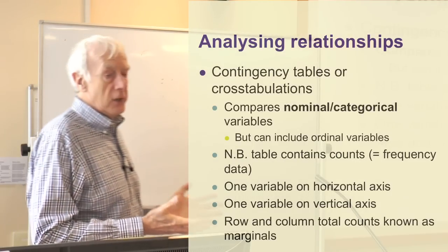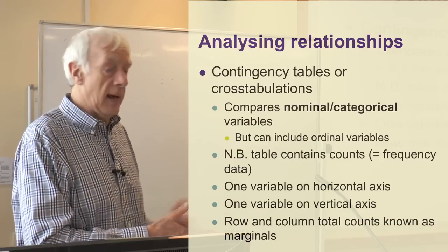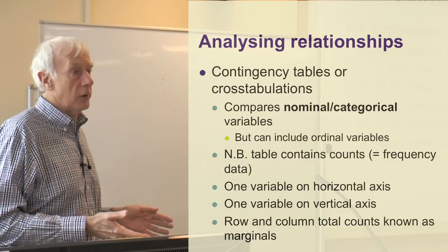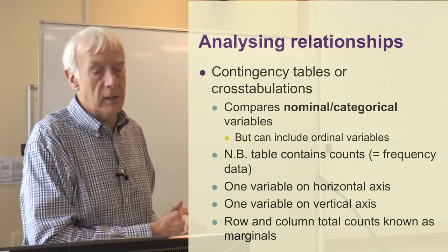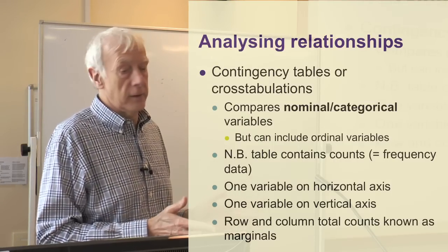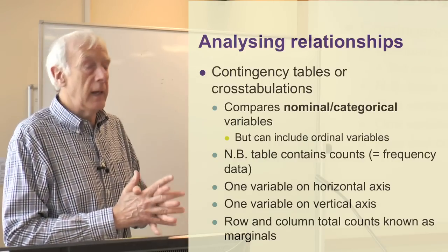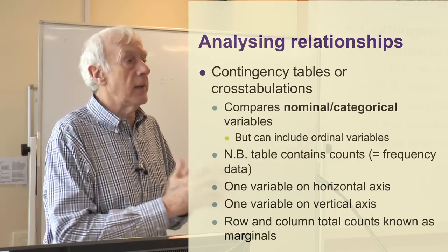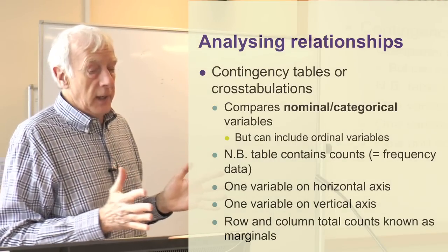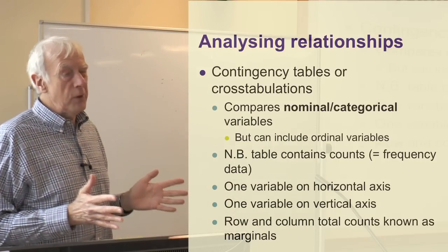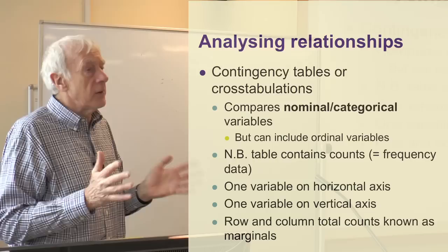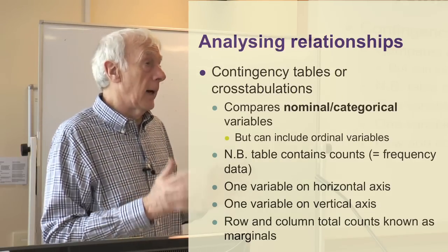We're looking at relationships expressed through tables, often called contingency tables or cross-tabulations. These are arrangements of rows and columns — both the rows and columns are variables from your dataset — and the cells contain the actual counts, how many individuals fell into each cell. In other words, they had a value corresponding to both that column and that row. The variables used here are generally nominal or categorical variables, though you can include some ordinal ones too, such as scales from one to five. But you don't want too many values, so nominal or categorical tend to be what we use.